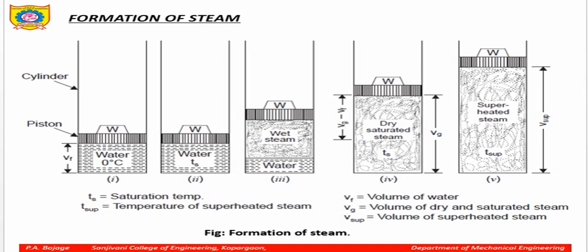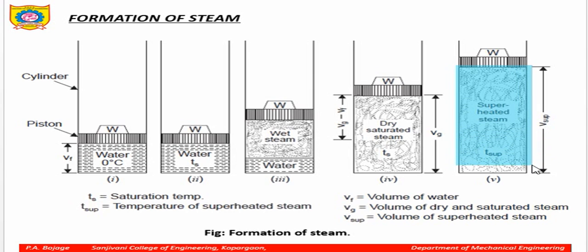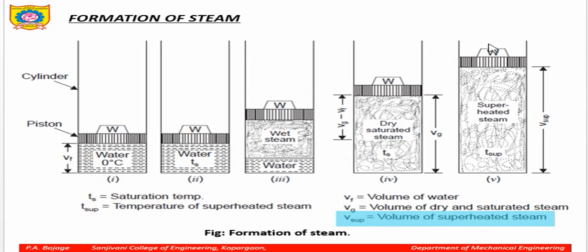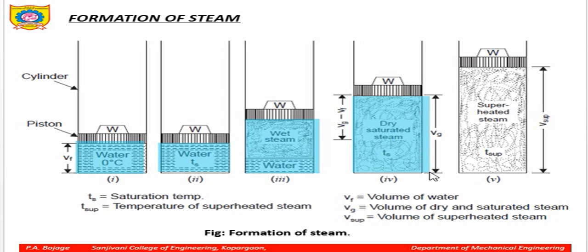Vg is the volume of dry saturated steam and Vf is the volume of water. A stage will come where the volume of liquid becomes zero, and if you still heat that steam above the dry saturated line, it gets converted into superheated steam. That temperature is called the superheated temperature — T sup — and the steam will acquire a volume V sup. So we started from liquid, it got converted into wet steam (liquid plus vapor), then dry saturated steam, and finally into superheated steam.